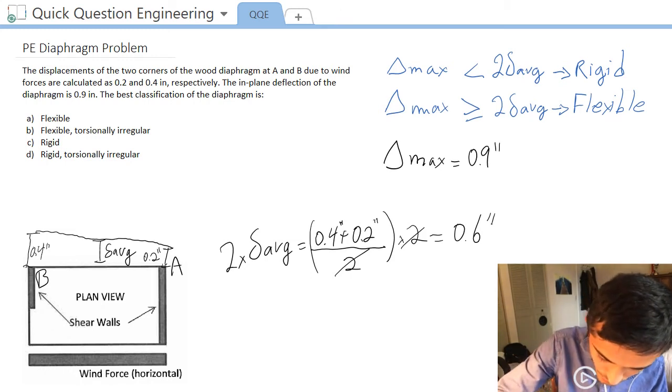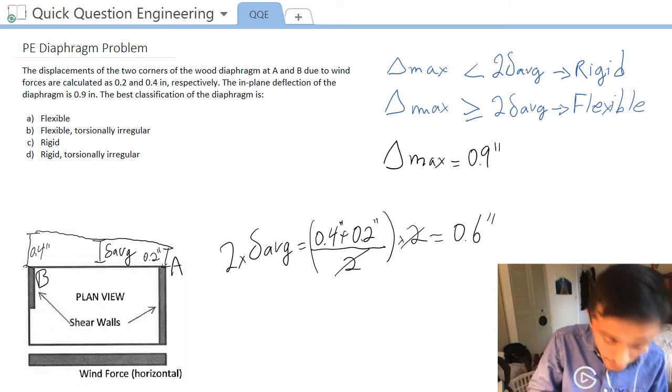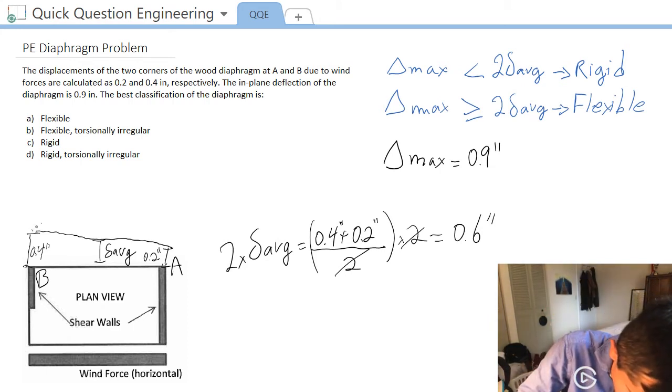So let me just draw what the diaphragm deflected shape would look like in our diagram. So our diaphragm would deflect something like this, going from one point to the other. And then we'd want to deflect like that, probably not all the way here, but you get the point that we deflect on the bottom and at the top. And then here would be my delta max.